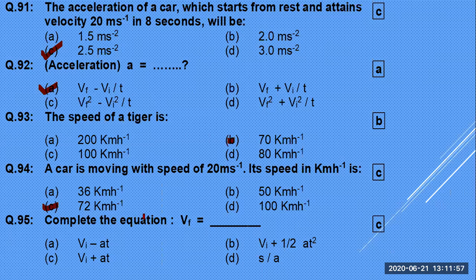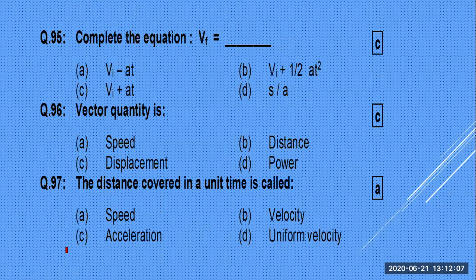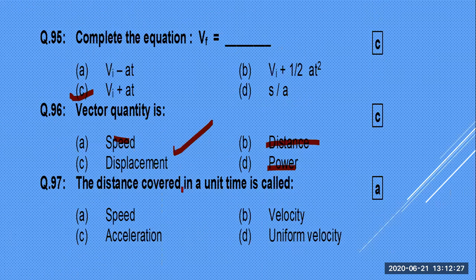Complete the equation: Vf = Vi + at. This is the first equation of motion — option C. Displacement is a vector quantity. Distance covered per unit time is speed, not velocity. Rate of change of velocity is acceleration.